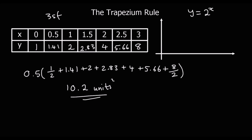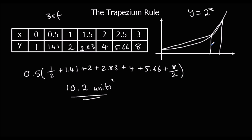Is it an overestimate or an underestimate? The graph of y = 2^x has an exponential shape. Looking at where the trapeziums sit relative to the curve, the trapeziums go over the curve, so the answer of 10.2 is an overestimate of the exact area under that curve.